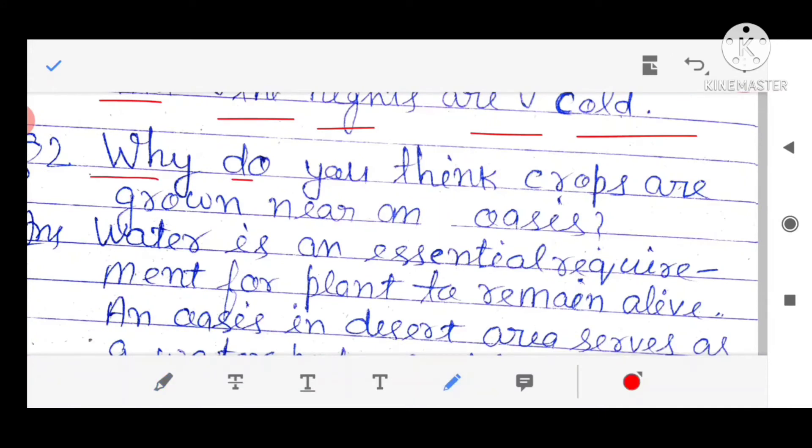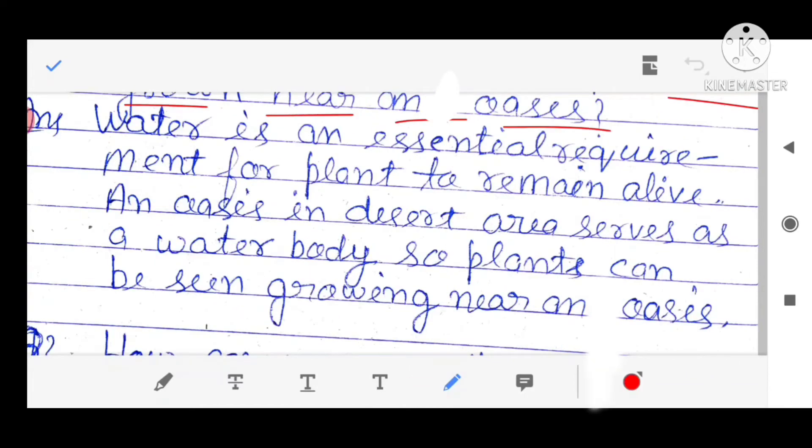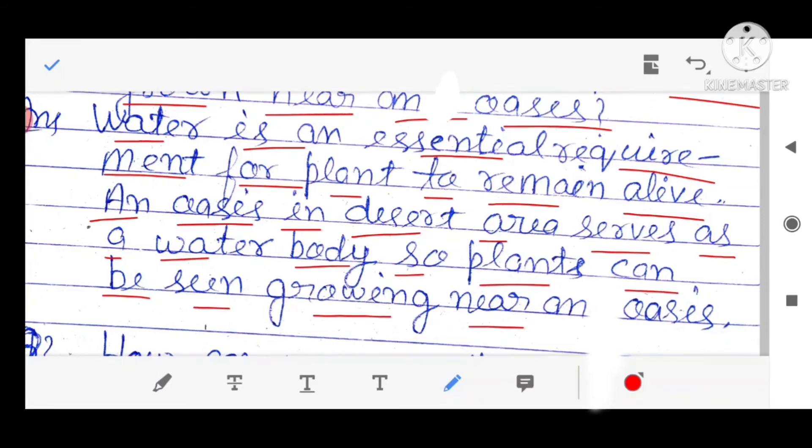Why do you think crops are grown near an oasis? Water is an essential requirement for plants to remain alive. An oasis in desert area serves as a water body. Plants can be seen growing near an oasis.